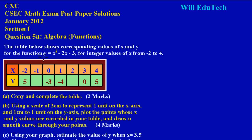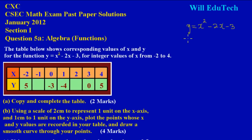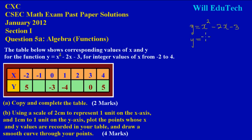Take the function they gave us: y = x² - 2x - 3. Since they ask us to find the corresponding y value when x = -1, I'm going to replace x in the function with -1 everywhere I see x.